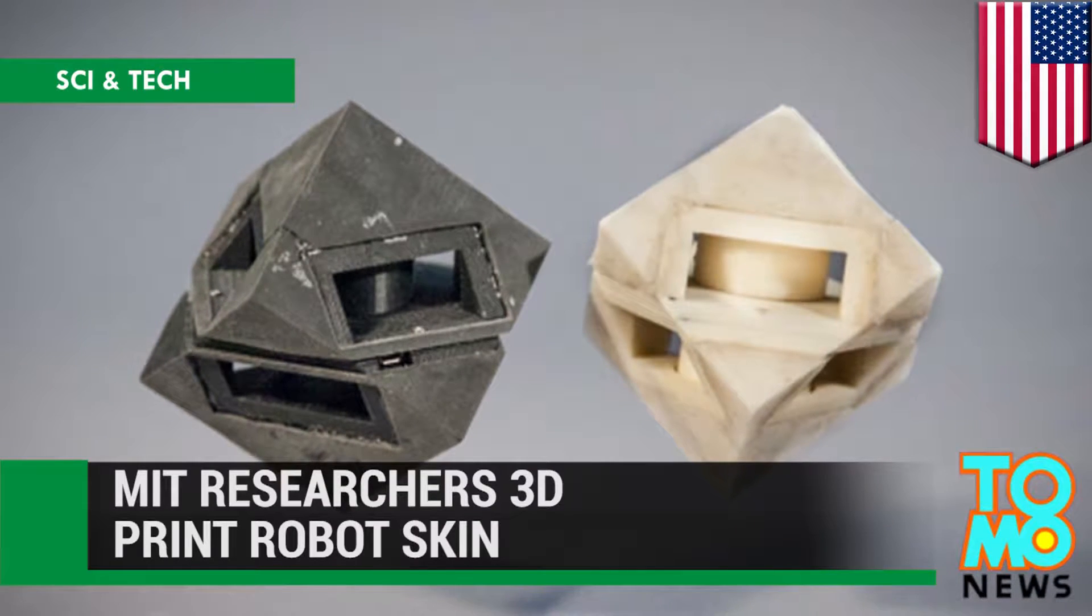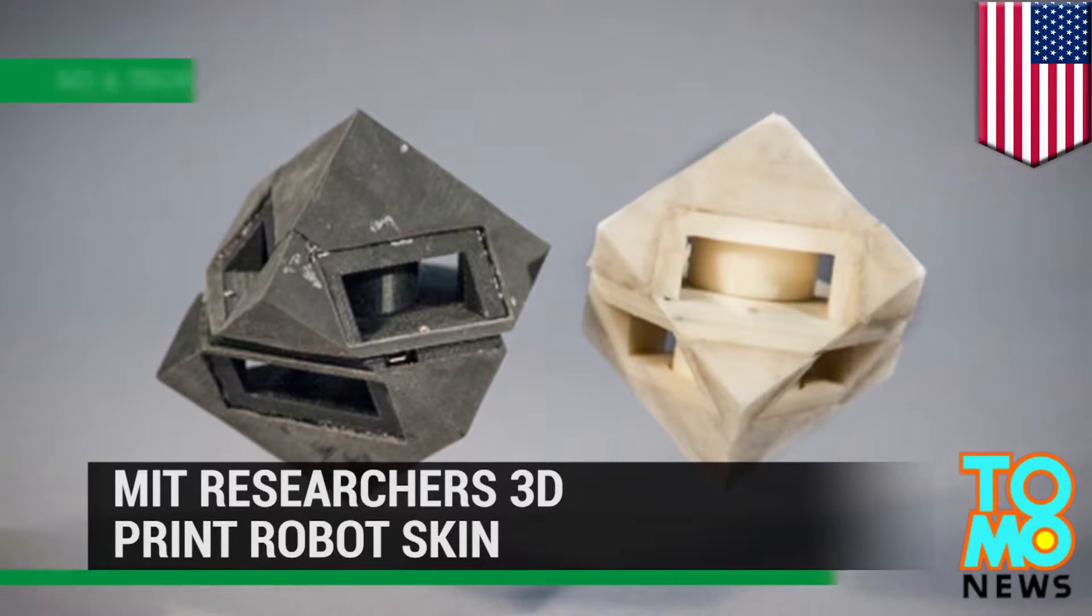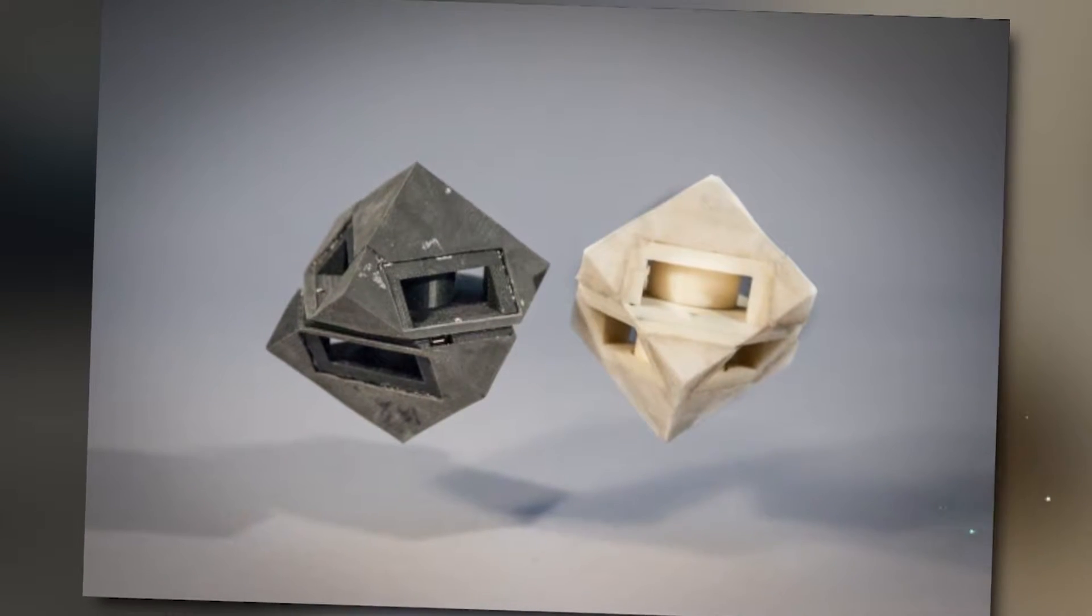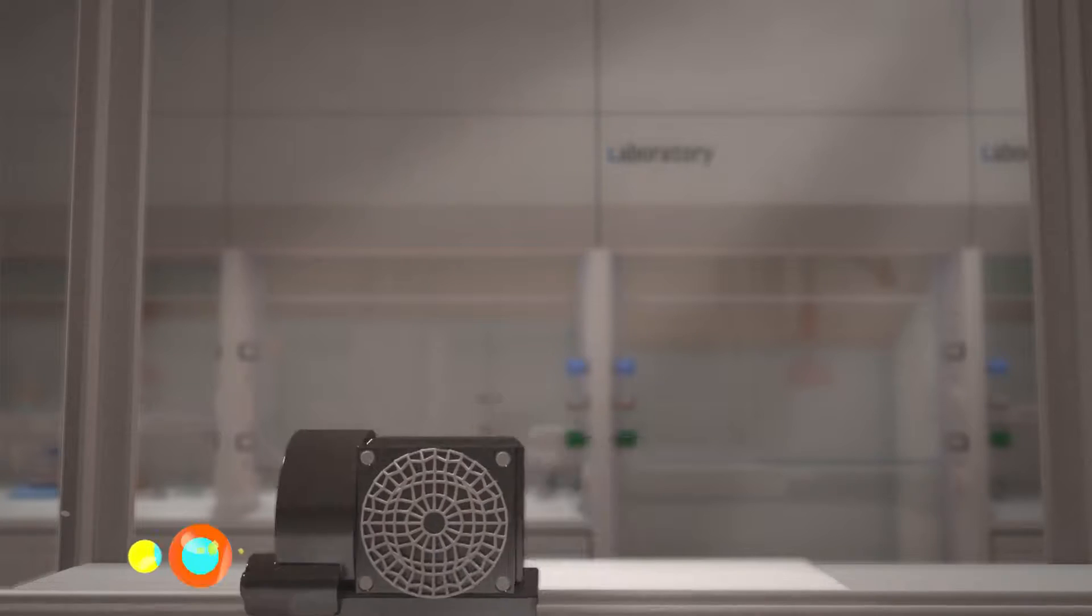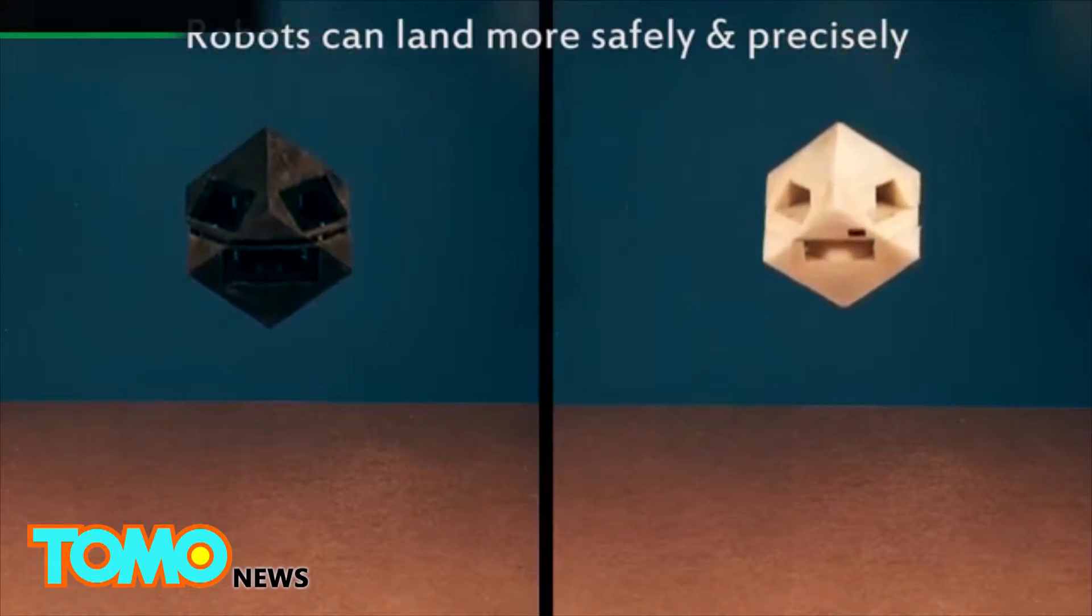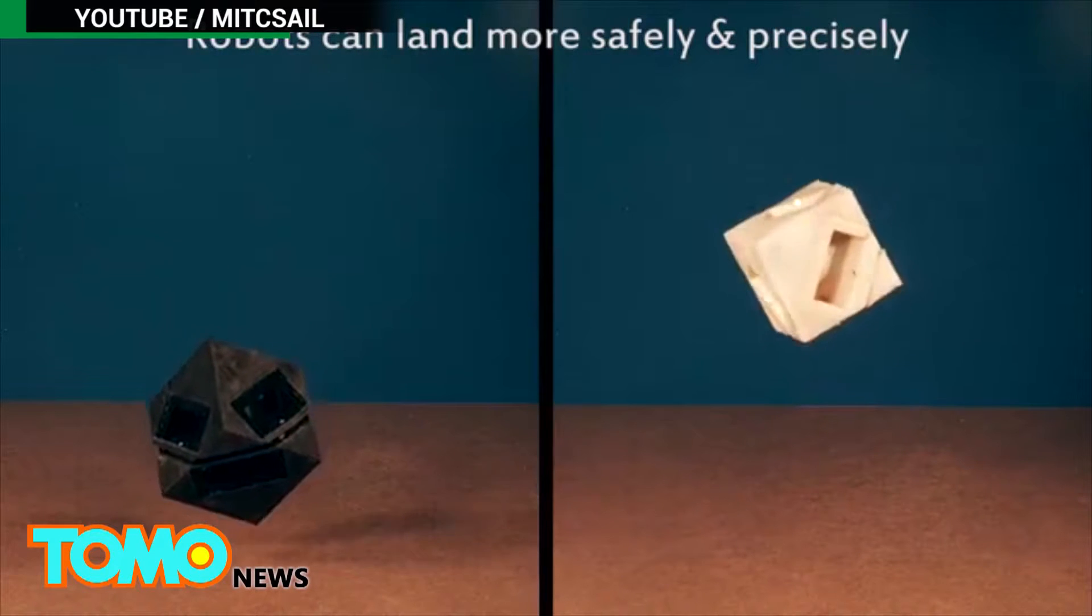MIT researchers create 3-D printed robot skin. These robot cubes are wearing MIT's latest creation. Researchers at MIT have developed 3-D printed skin for robots. The skin protects robots and helps make their movements more precise.